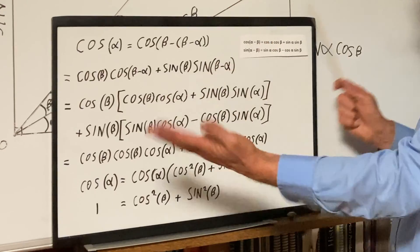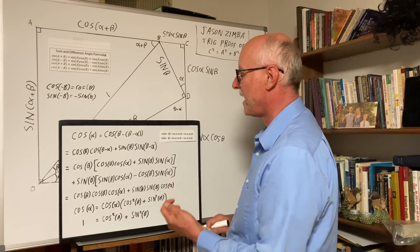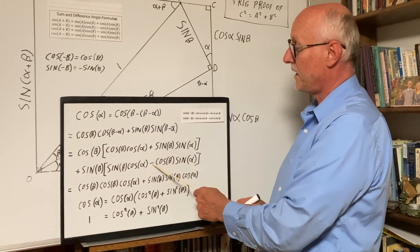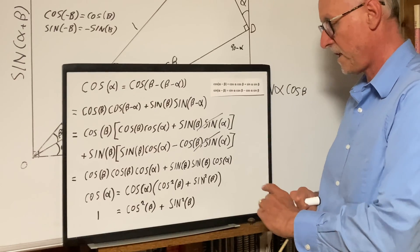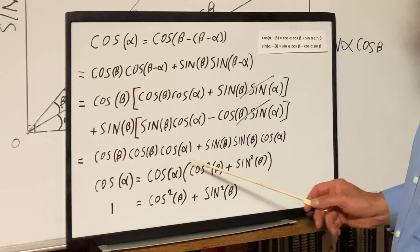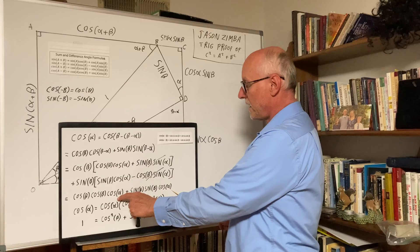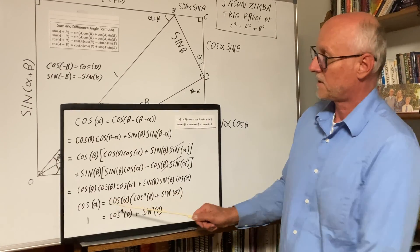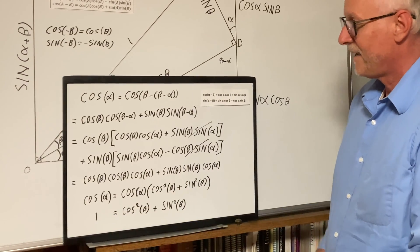Fortunately there's a cancellation that happens. We've got cosine beta cosine beta cosine alpha with a negative sign, so fortunately this cancels, and we are left with cosine squared beta cosine alpha and sine squared beta cosine alpha. We can factor out cosine alpha, leaving behind cosine squared beta plus sine squared beta, and of course cosine alpha over cosine alpha cancels out to one.